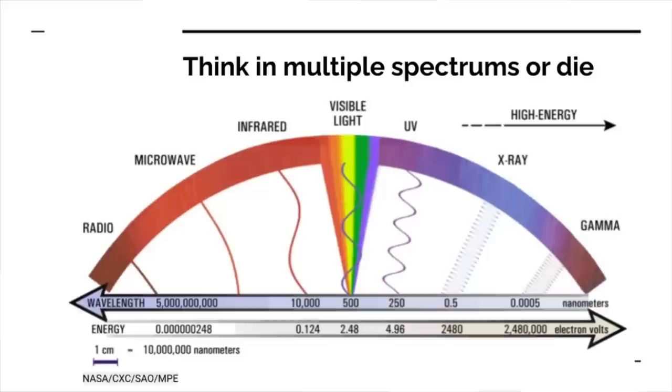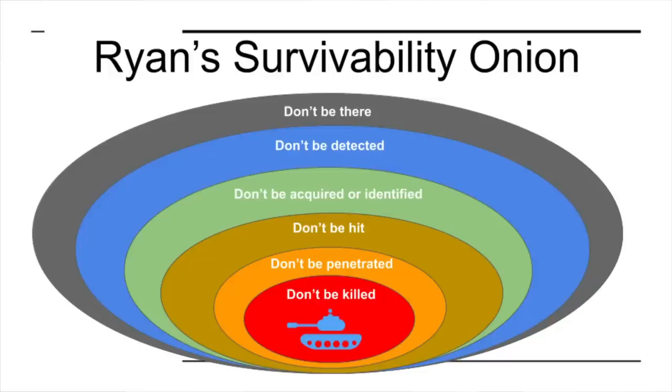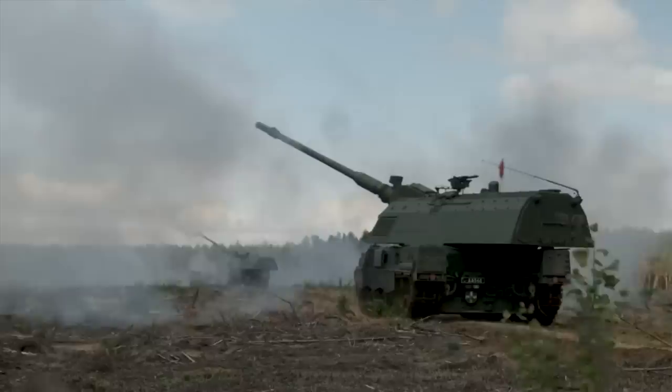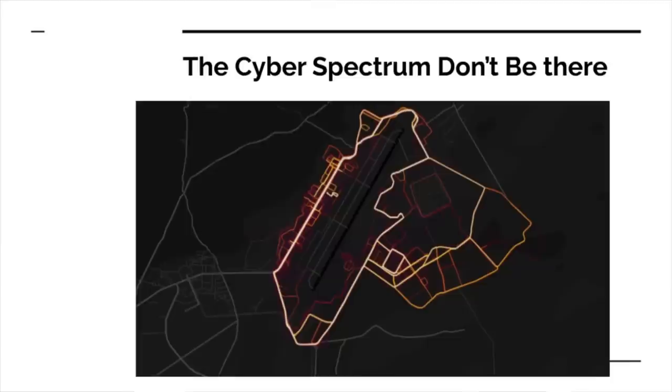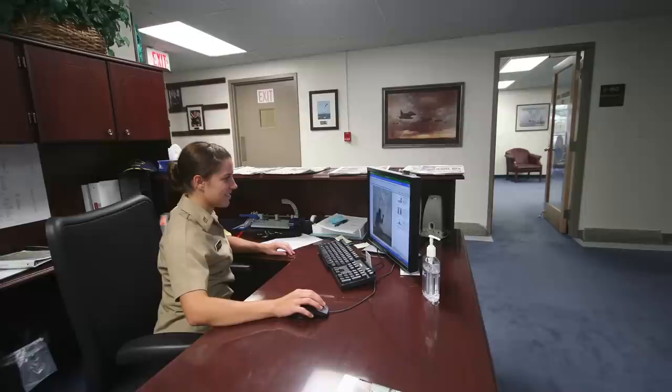One big difference between my survivability onion and many others is the first layer: don't be there. I am a huge fan of this because if this condition is met, nothing else your adversary does really matters. At the strategic level it means always stay mobile — always keep your adversary guessing as to where you are or where you're going to be. At the tactical level it means noise, light, and litter discipline. Keep your electronic signature as low as possible, thinking in multiple spectrums. Don't be there is part of the tactical cyber spectrum and includes things like fitness trackers and Facebook posts.